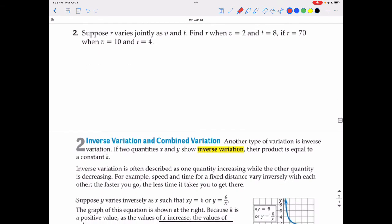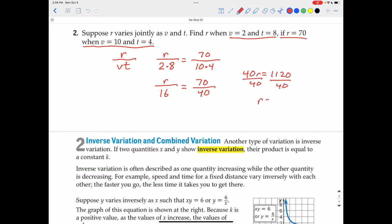Suppose r varies jointly as v and t. That means r over the product of v and t is going to be part of the initial setup. Find r when v equals 2 and t equals 8. So that would be 2 times 8. Set that equal to if r is 70, when v equals 10 and t equals 4. So that would be 10 times 4. I will multiply 2 times 8, that's 16, and 10 times 4, which is 40. When we cross multiply, we would have 40r equals the product of 70 and 16, and that is 1,120. Divide by 40, and r will equal 28.